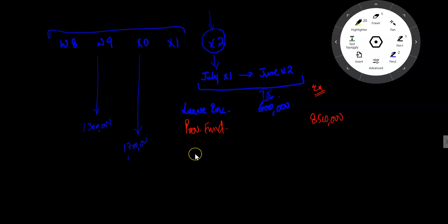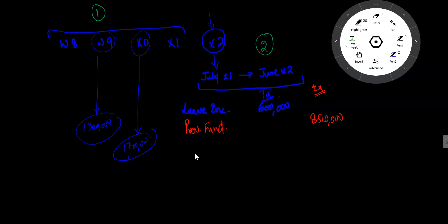The choice regarding salary arrears is as follows: Option one — the arrears are taxed in the year to which they relate, meaning the W9 and X0 amounts are taxed in those respective years. Option two — the arrears are taxed in the year they are received, which is X2. We need to evaluate which option results in lower tax liability.